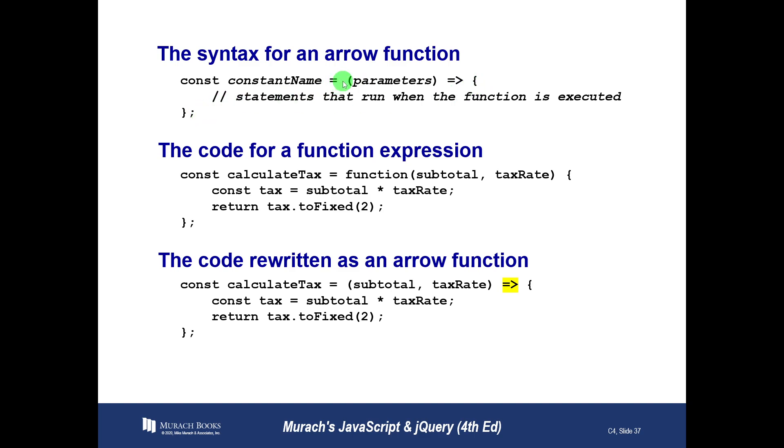So the function keyword disappears, the arrow gets added on the right side. We still have a list of parameters in parentheses. Let's look at this code from the last video, where we had a function expression to calculate taxes. We had calculate taxes, our constant, equals, and then we had the function keyword with subtotal and tax rate, and then our block of code that multiplied and returned the tax.